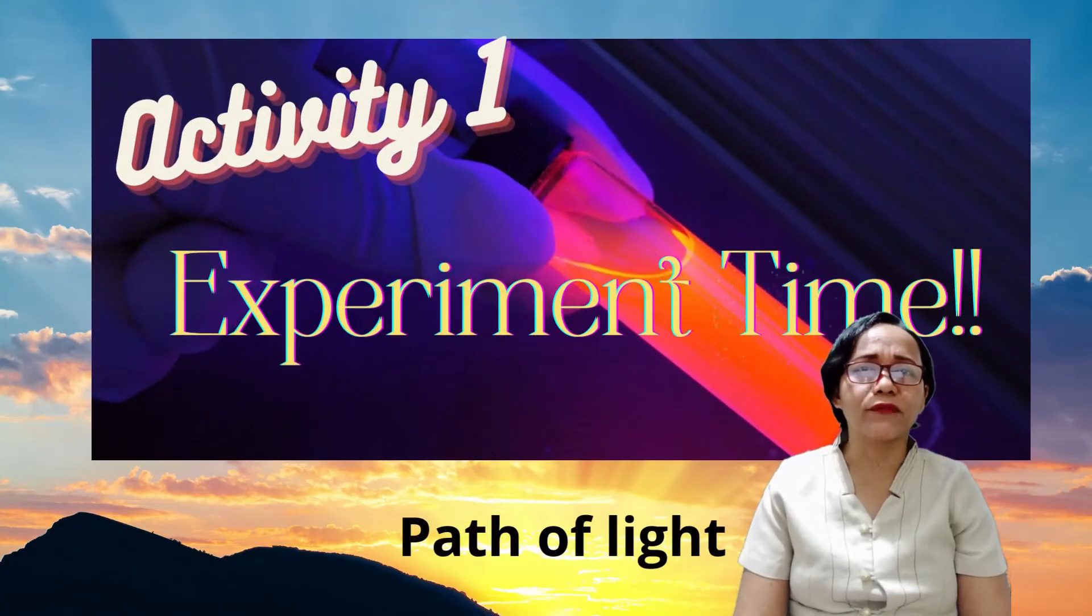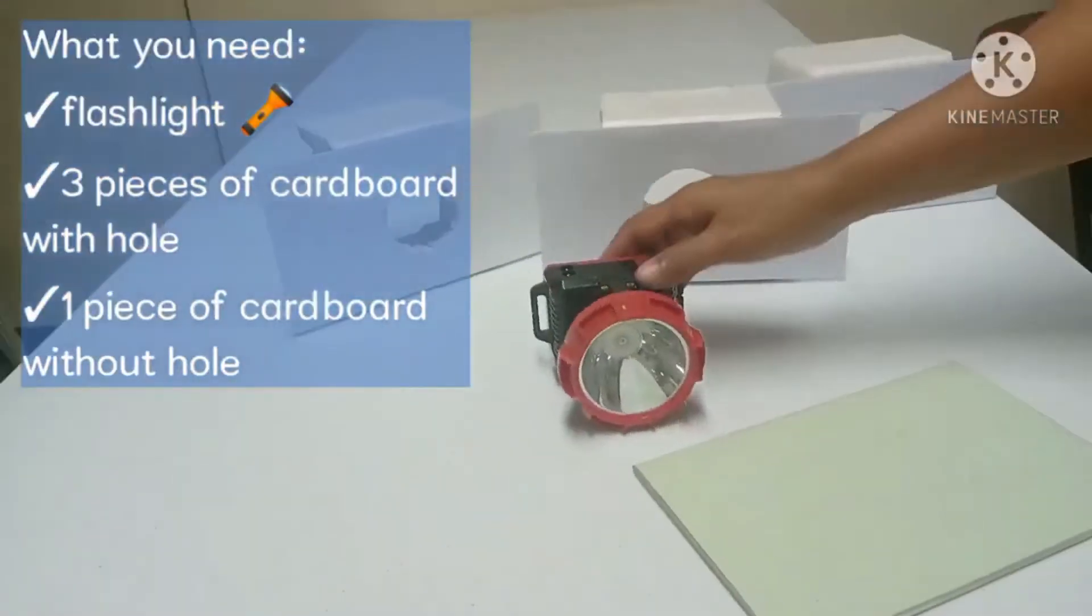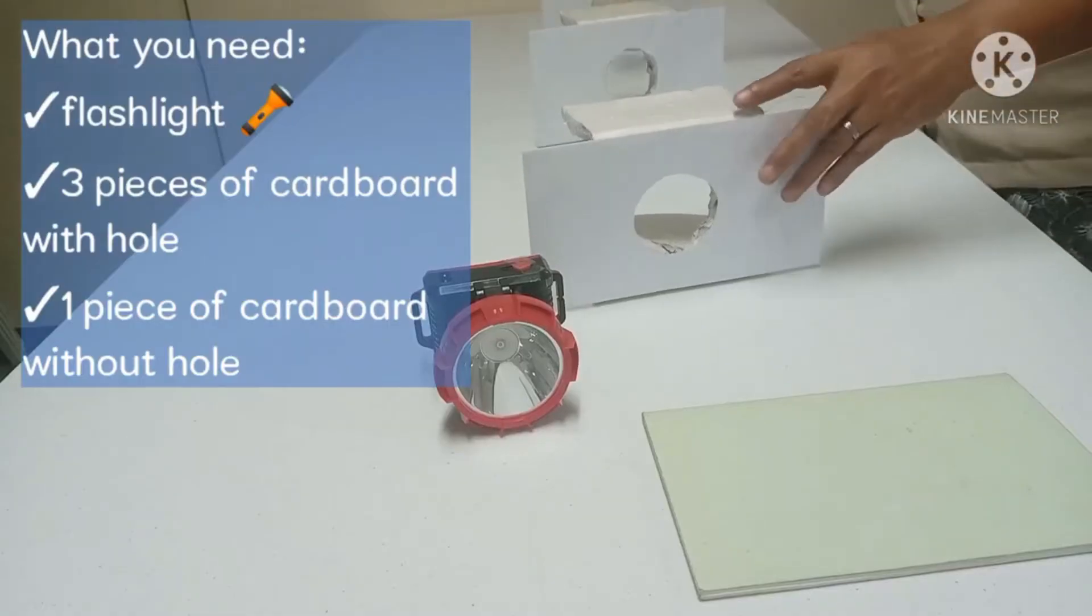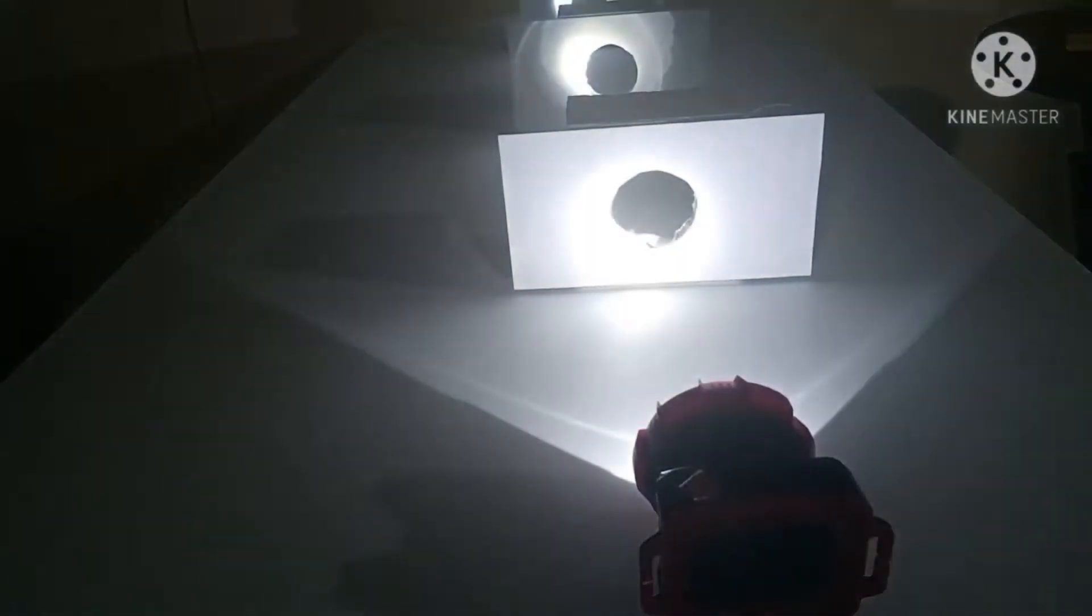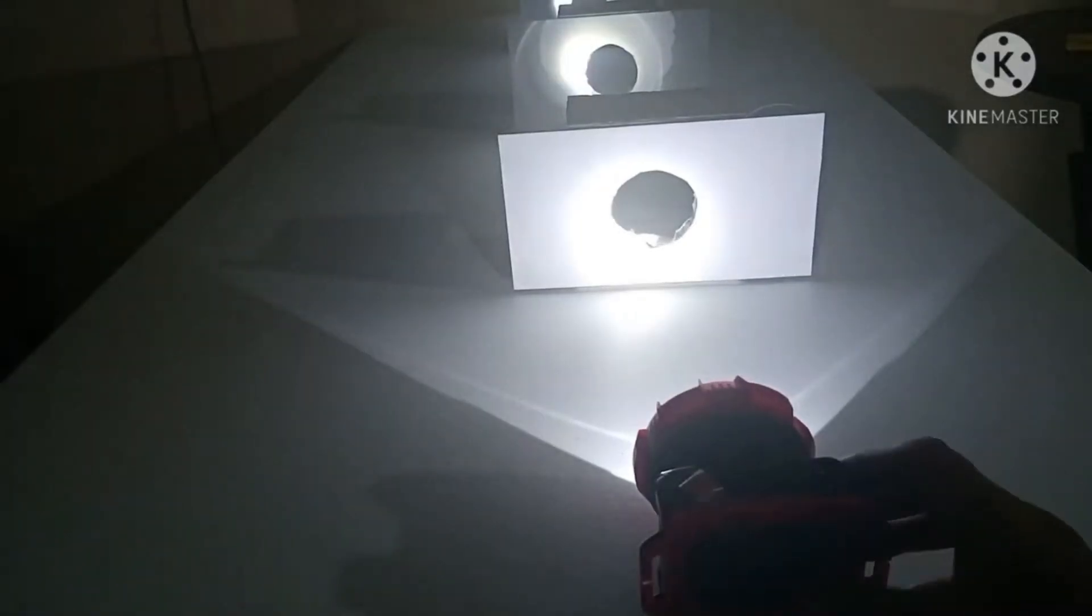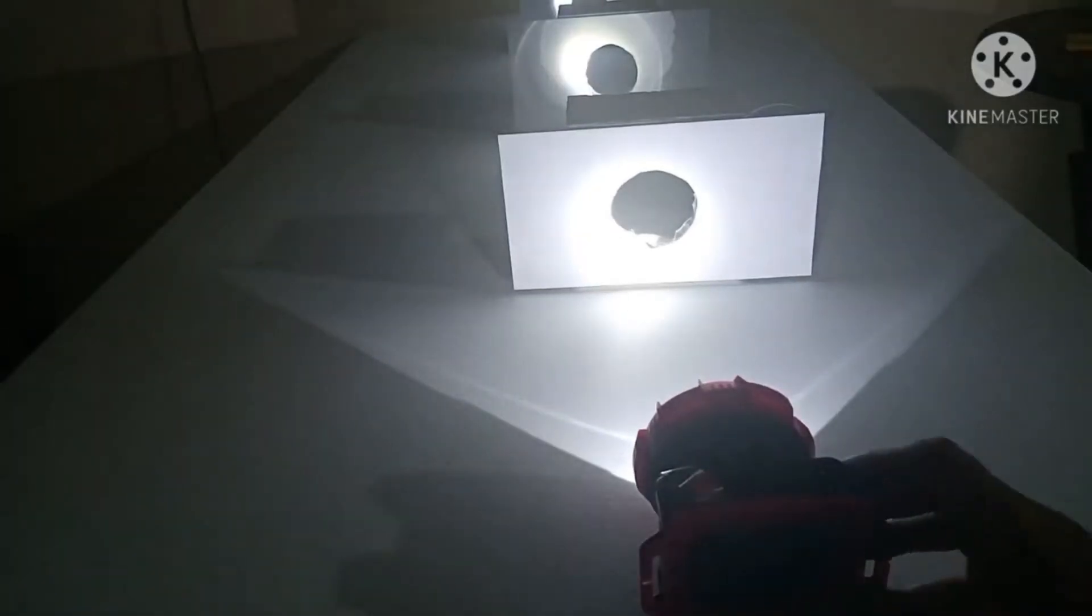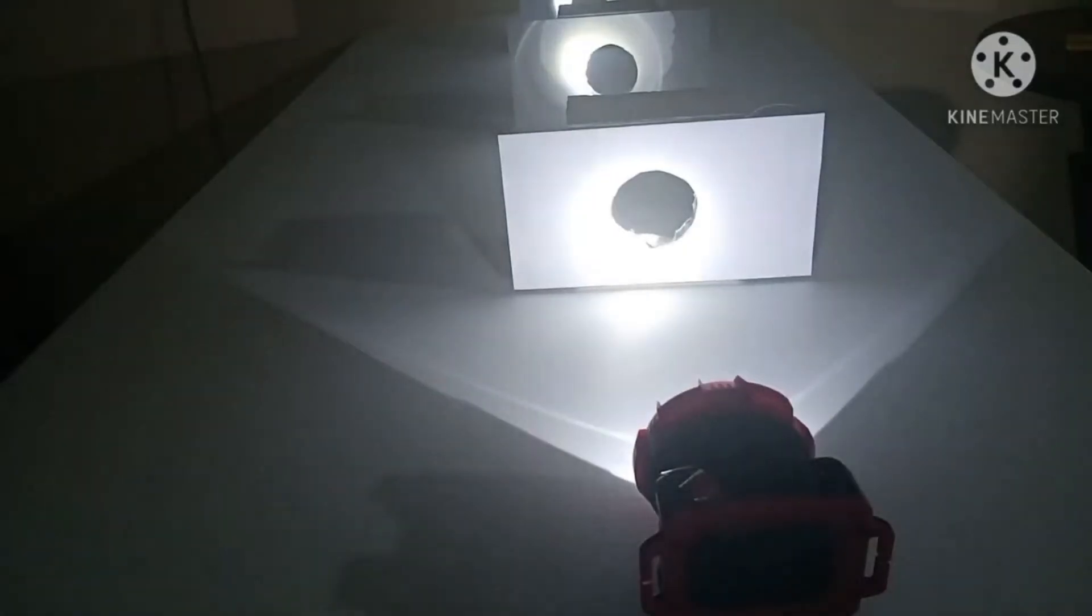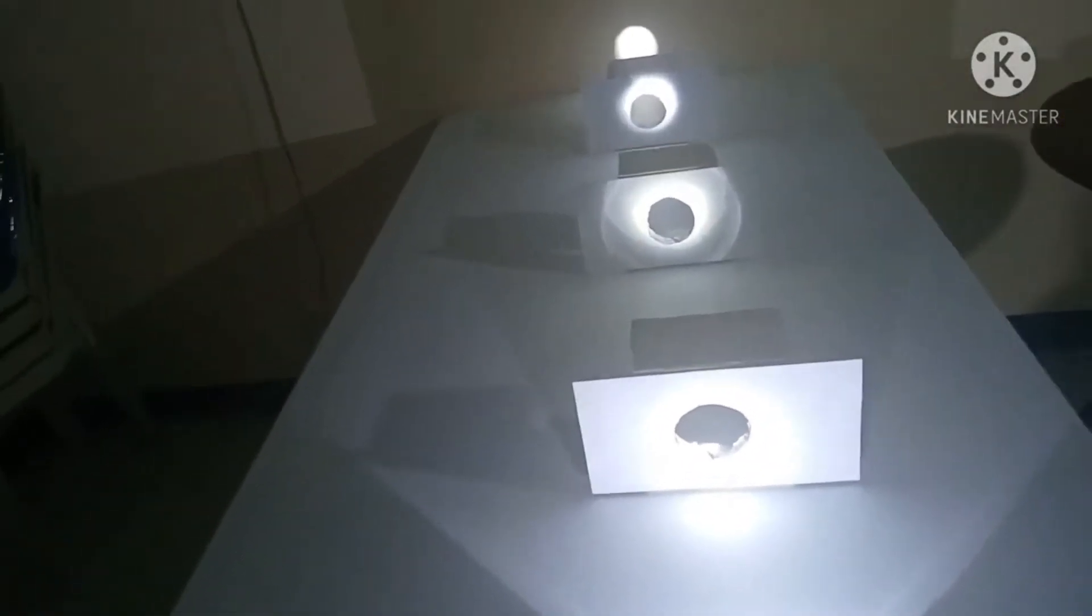Now let's find out how light travels by doing Activity 1, searching for the path of light. These are what you need in this activity: flashlight, three pieces of cardboard with holes, and a piece of cardboard without hole. Bring all the materials into a dark room. The cardboards should be at least one foot away from each other, and the holes should be aligned so that the wall can be seen through the holes. Switch on the flashlight and focus the light through the holes. Ask your partner to block the path of light with the cardboard without a hole.